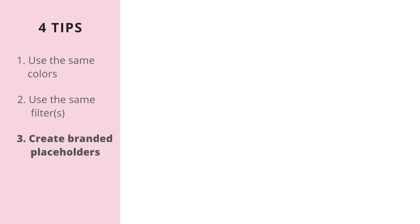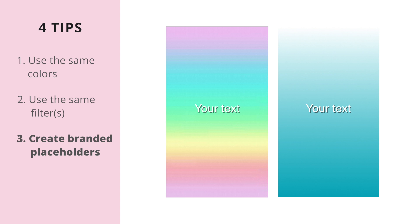The third tip is to prepare placeholders for your text. There are three ways you can prepare placeholders. The first one is to do it on your computer or in the app called Canva. Just make sure that you are using a portrait placeholder and not landscape, unless you are using landscape for something like a tutorial.